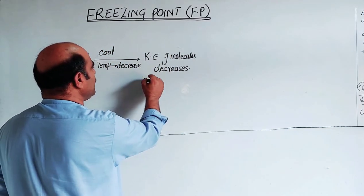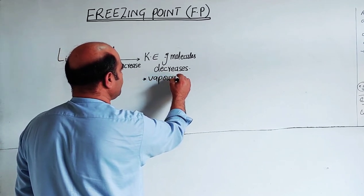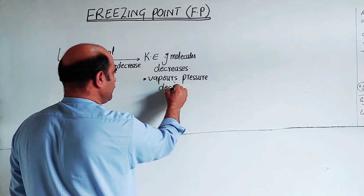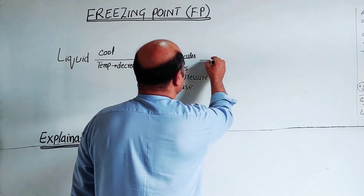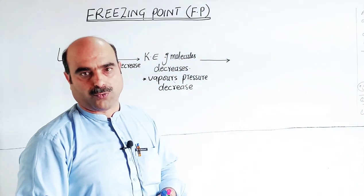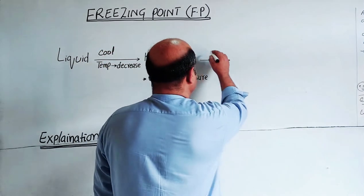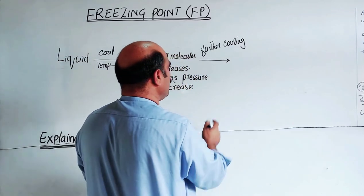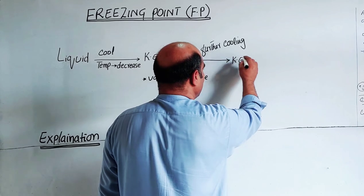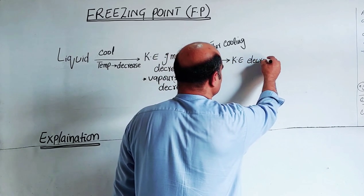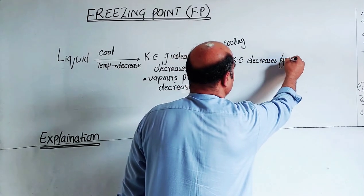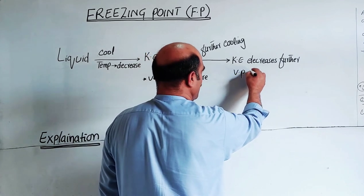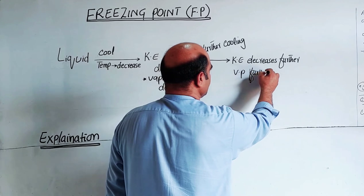As the kinetic energy of liquid molecules decreases, the vapor pressure of that liquid also decreases. With further cooling of the liquid, the temperature goes down further, the kinetic energy of liquid molecules decreases further, and the vapor pressure decreases further.